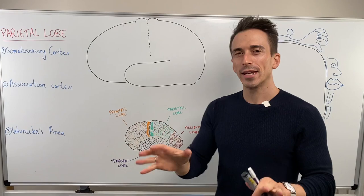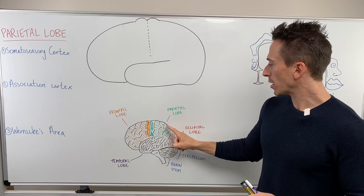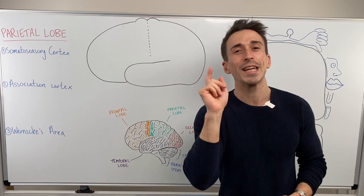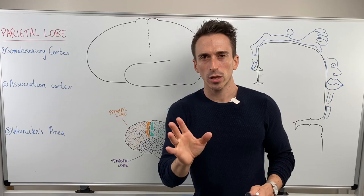Hi everybody, Dr. Mike here. In this video we're going to take a look at the parietal lobe. As a quick run through, remember the four main lobes include the frontal lobe, the parietal lobe, the occipital lobe, and the temporal lobe. There's also the insula which sits just sort of underneath the temporal lobe — it's like the ground floor of the cerebral cortex. We're going to focus on the parietal lobe in this video.